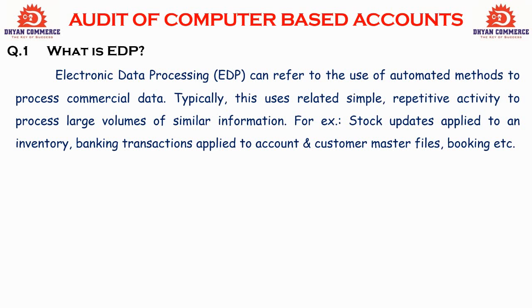EDP is a process helpful for handling repeated transactions automatically. For example, a company has stock updates — if you press the same button, the stock details update automatically. Similarly, in a bank, employees use their computers to apply all transactions to your account number. When data is automatically stored and processed in this manner, that system is called ADP — Electronic Data Processing.